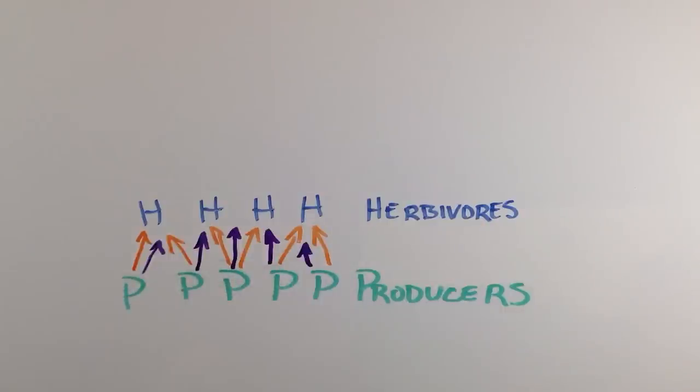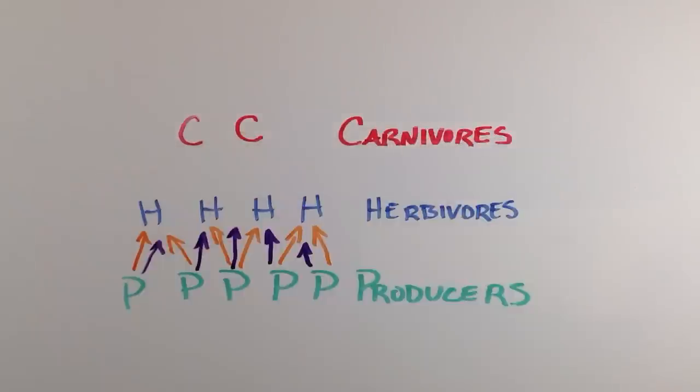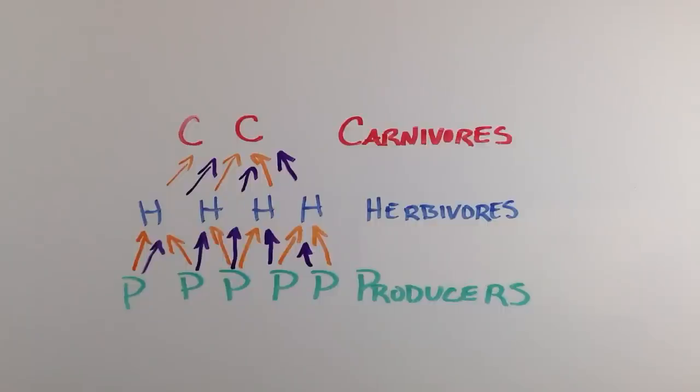Herbivores, animals who eat the plants, take the energy and nutrients in plant bodies and incorporate it into their own when they eat the plants. Likewise, carnivores, the animals that eat the herbivores, will eat them and incorporate the energy and nutrients that start with the plants into their bodies.